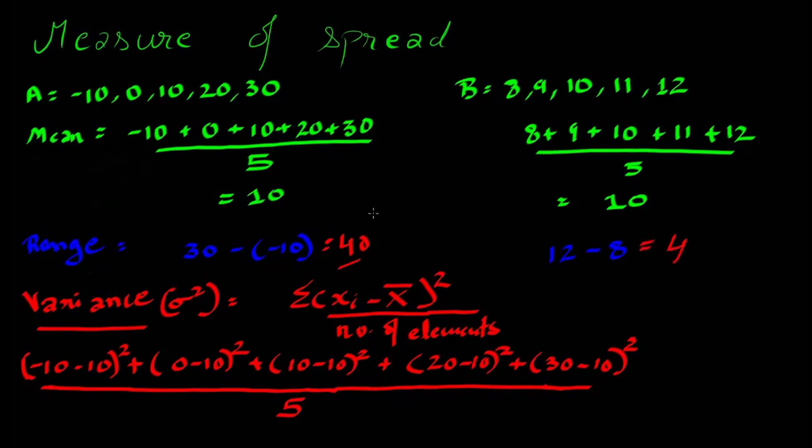So this gives a sense that set A has a higher range and B has a lower range. Now we will talk about variance. Variance is a very simple statistic that gives you an extremely rough idea of how spread out a data set is.